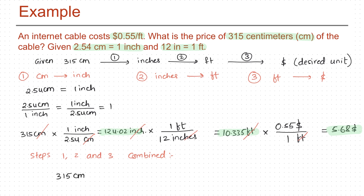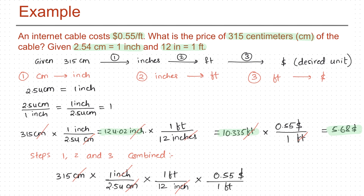We can combine all three steps in one single conversion. Starting with 315 centimeters, multiply by 1 inch per 2.54 centimeters — centimeters cancel. Then multiply by 1 foot per 12 inches — inches cancel. Then multiply by 0.55 dollars per foot — feet cancel, leaving dollars as the desired unit. Plugging all values into the calculator gives 5.68 dollars, the same answer as before.